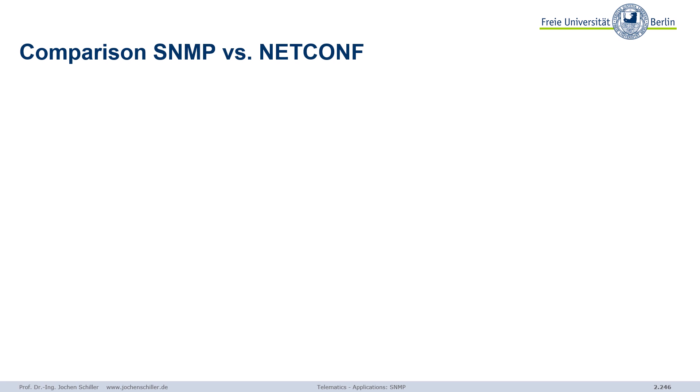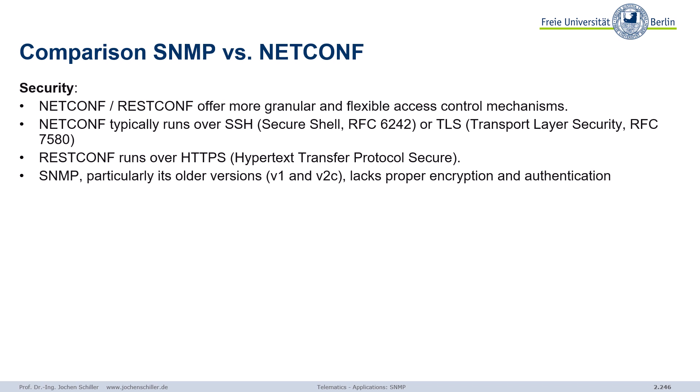Comparing SNMP and NETCONF: SNMP is still the protocol and architecture used for network management; NETCONF is coming up, but deployment always takes time — even though NETCONF is now 10–12 years old. There are clear advantages: NETCONF and RESTCONF offer more fine-grained, more flexible access control compared to SNMP. In SNMP version 1 and 2 there was basically no encryption of everything, and once you logged in you could do everything. NETCONF is way more flexible; it typically runs over SSH or TLS, and RESTCONF uses HTTPS — so security is definitely way better.